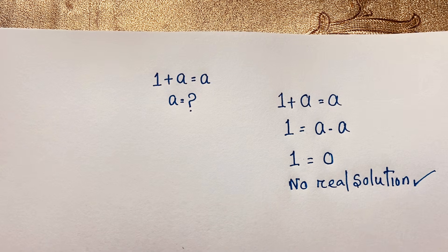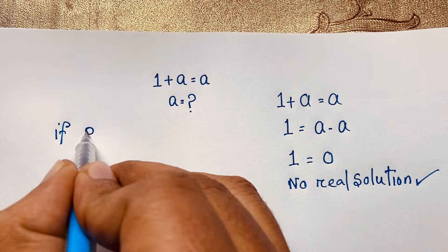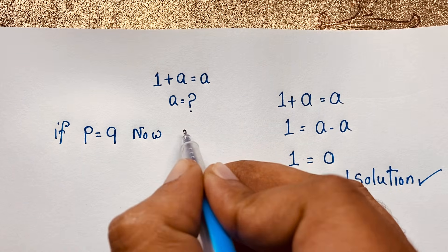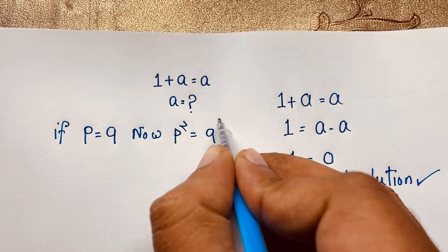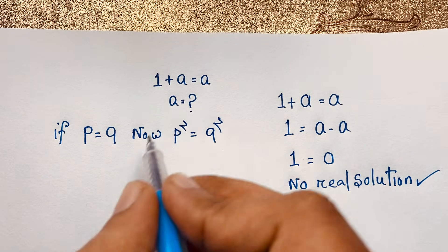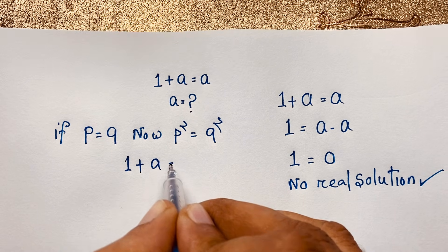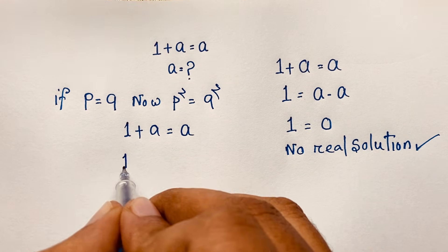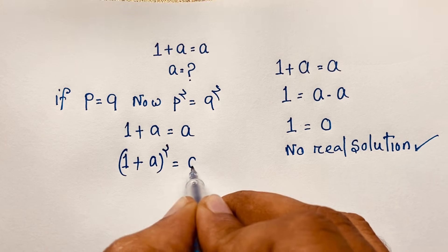But how do we solve this interesting math problem if we try another method? If you think p is equal to q, then squaring both sides gives p² equal to q². So applying this to our problem — 1 plus a is equal to a — if we square both sides, we get (1 + a)² equal to a².